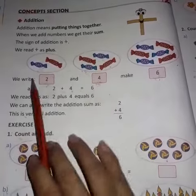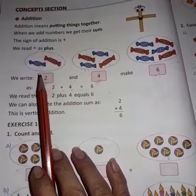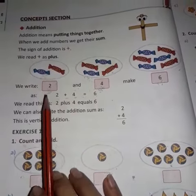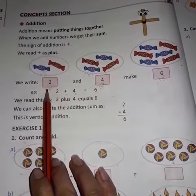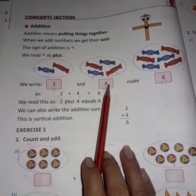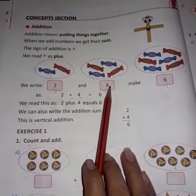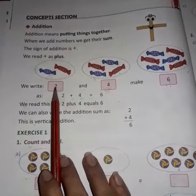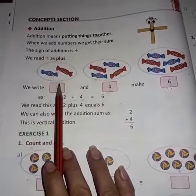So in this picture, it has toffees in the both boxes. That are two toffees in first box and four toffees in second box. Now we have to add the toffees from the both boxes, okay?